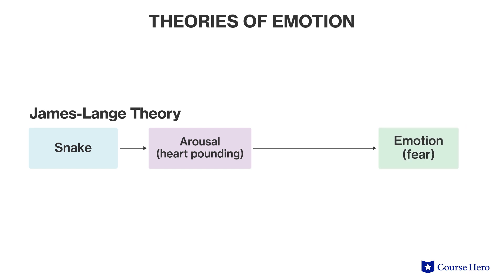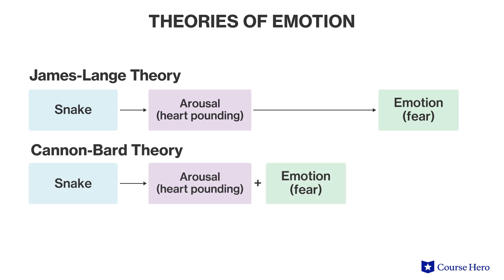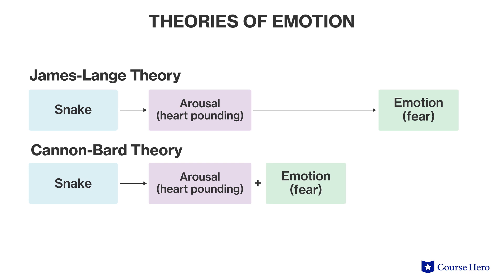But other research pointed out that physiological arousal does not vary enough to explain the different types of emotions that people experience. In response, the Cannon-Bard theory distinguishes physiological arousal and emotional experiences as two separate yet simultaneous occurrences. So if that snake is nearby, a person feels fear at the same time as the physical arousal from the fight-or-flight response.